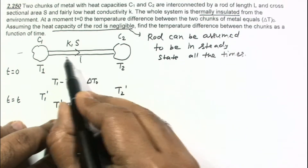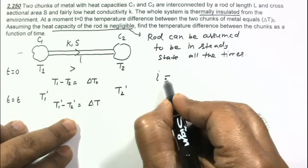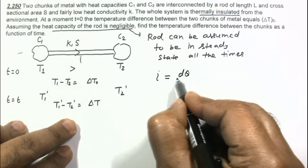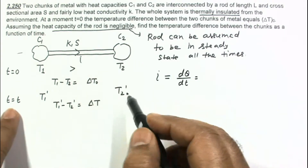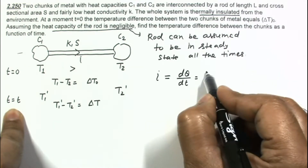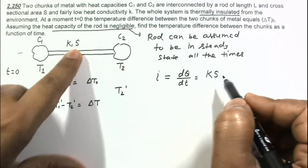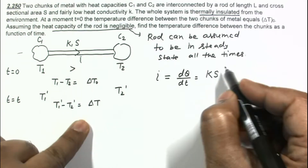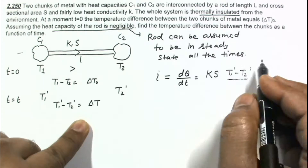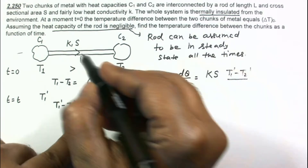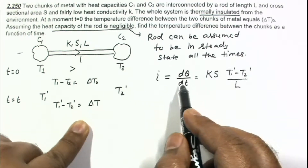Using the heat transfer equation, I am writing the heat current I as dQ by dt. For some general time T, the heat current can be written as I equals K times S times the temperature gradient, which is T1 dash minus T2 dash divided by the length L. So this is the value of the heat current through this rod.